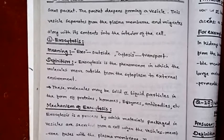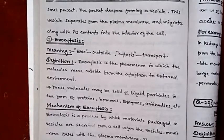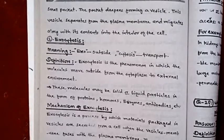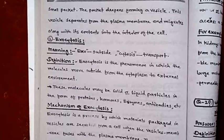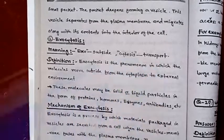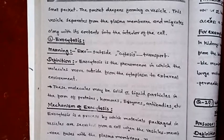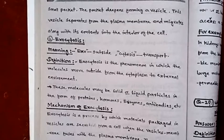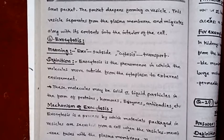Exocytosis means outside, cytosis means transport. Definition: exocytosis is the phenomenon in which molecules move outside from the cytoplasm to the external environment.